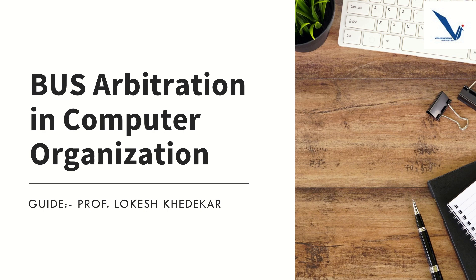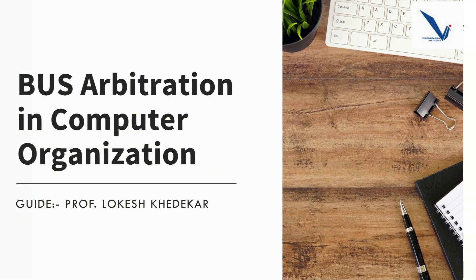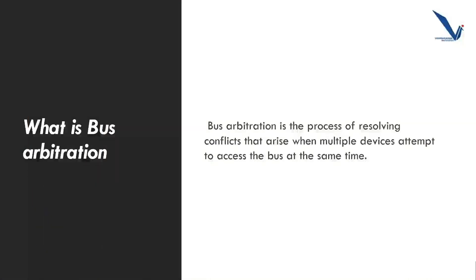In a computer system, multiple devices such as CPU, memory, and I/O controllers are connected to the common communication pathway known as a bus. In order to transfer data between these devices, they need to have access to the bus. Bus arbitration is the process of resolving conflicts that arise when multiple devices attempt to access the bus at the same time. When multiple devices try to use the bus simultaneously, it can lead to data corruption and system instability. To prevent this, a bus arbitration mechanism is used to ensure that only one device has access to the bus at a given point of time.